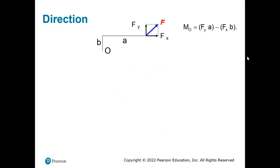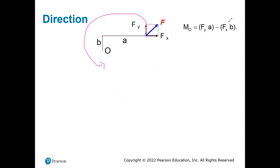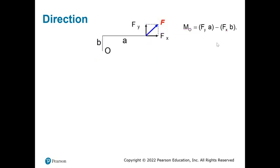The moment equals Fy times A minus Fx times B. The vertical component Fy acts at horizontal distance A from O, causing counterclockwise rotation — so that's positive. The horizontal component Fx acts at vertical distance B from O, causing clockwise rotation — so that's negative. This is how we compute the net moment using components.